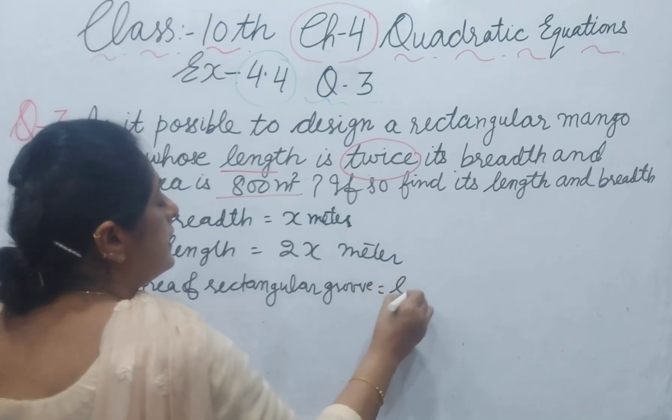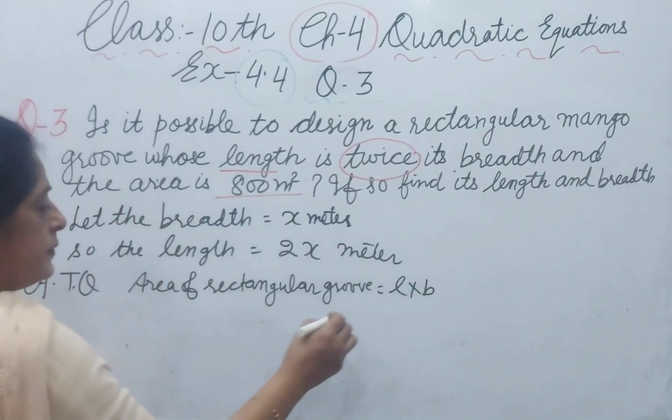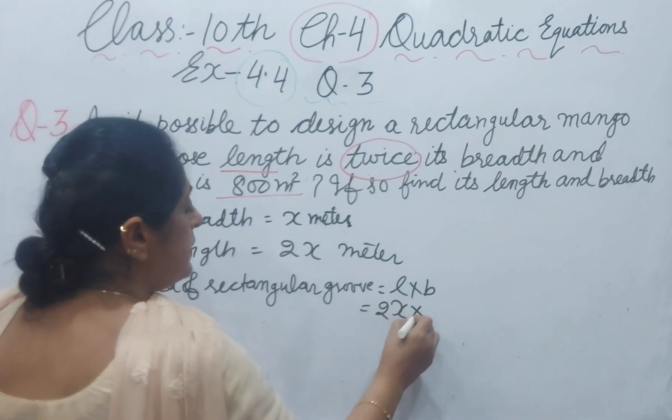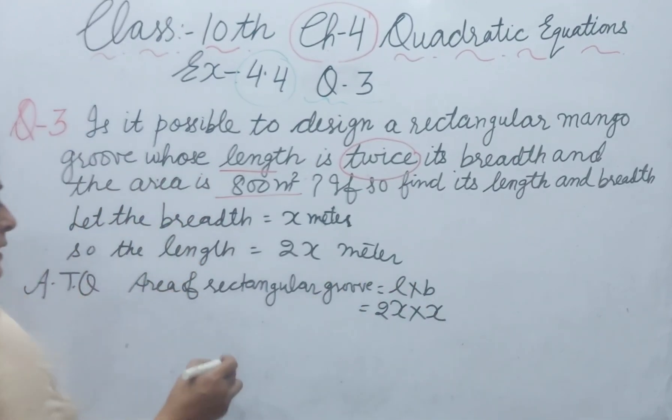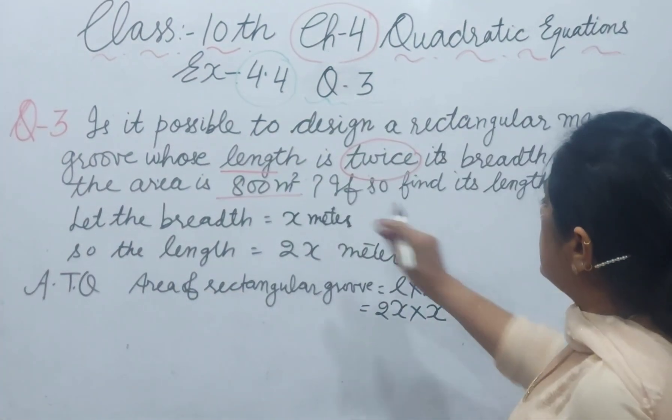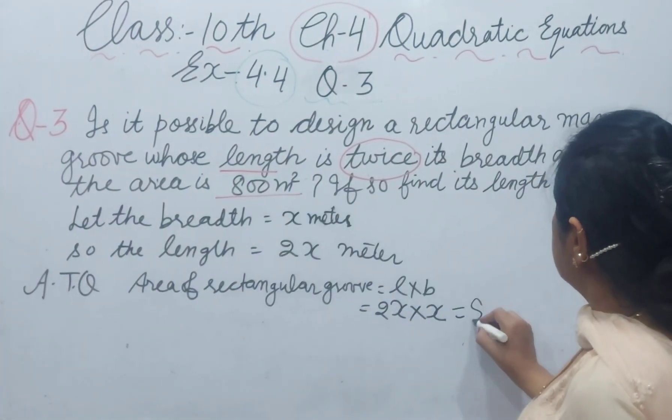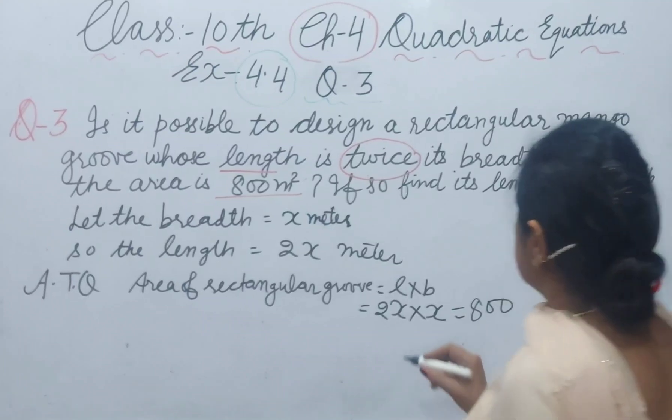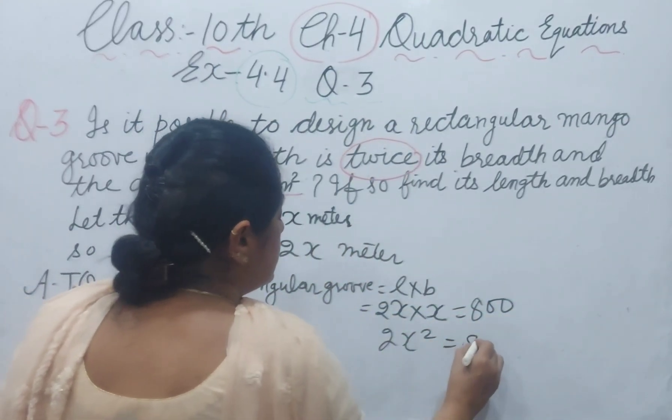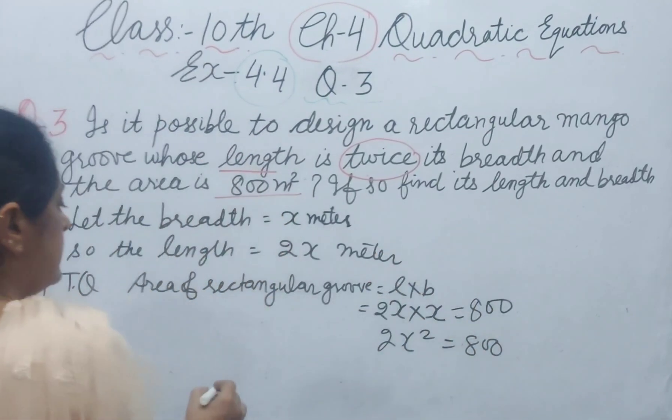equals length multiplied by breadth, which means 2x multiplied by x, and this equals 800 meter square. So 2x² = 800.